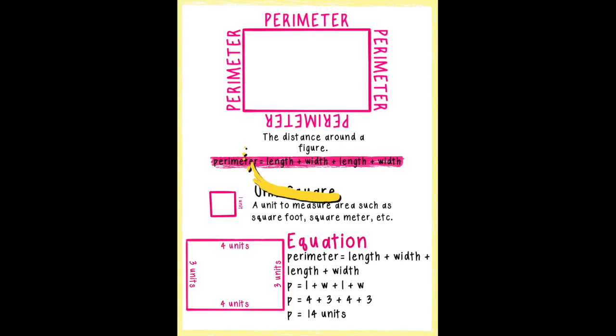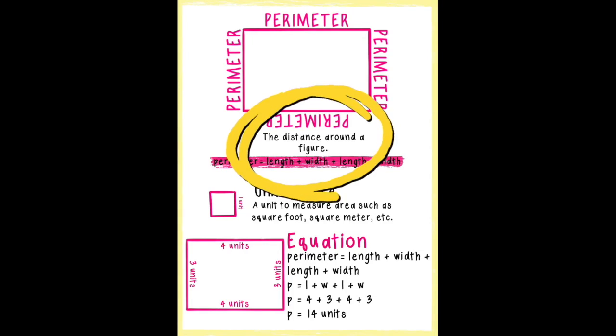Perimeter is measured in units — feet, meters, inches, centimeters — whatever the problem tells you. Perimeter is the distance around a figure.